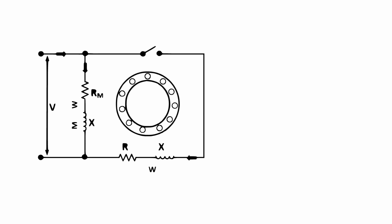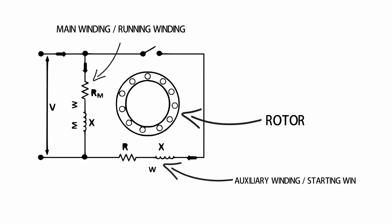This is the diagram of split phase induction motor. This is the rotor part which is single cage type and these are the stator parts. This winding is called main winding or running winding, and this winding is called auxiliary winding or starting winding.